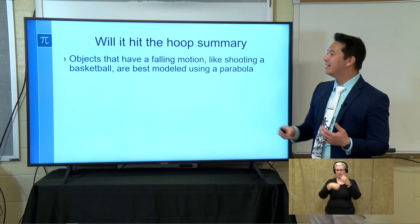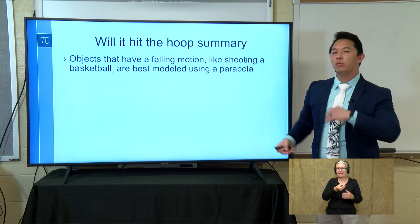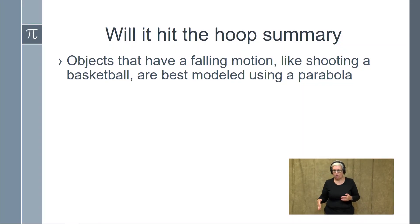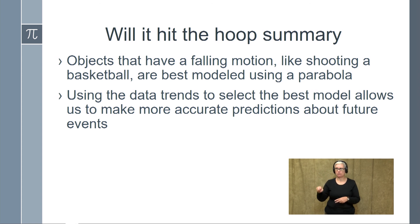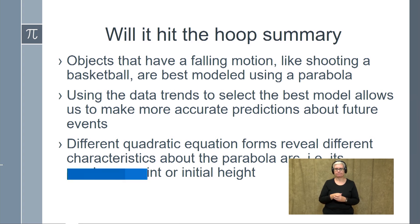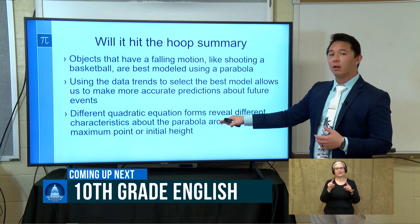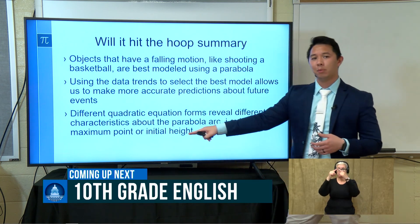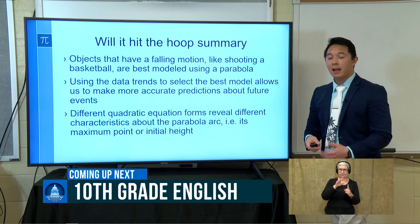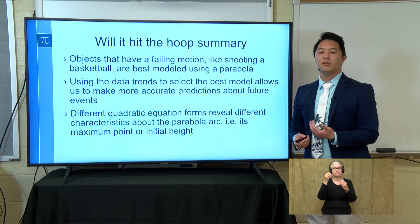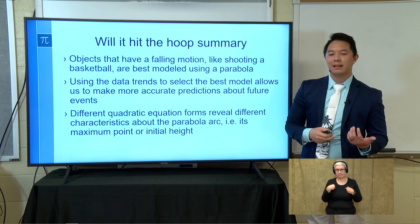To summarize these ideas: when we're talking about objects with falling motion — like shooting a basketball — the best model for the data is a parabola, not a line. The more information we have, the more accurate predictions we can make about future events. Thinking about the quadratic equation, each form reveals different characteristics: vertex form reveals the maximum point, while standard form reveals the initial height — like how tall the shooter is. The context and the information you want dictate which model to use.